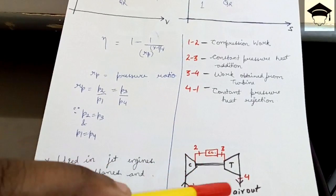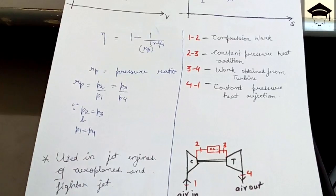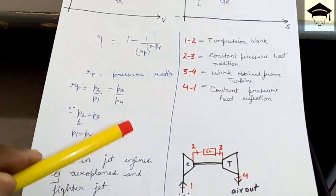And this is the open cycle and this is the main cycle that is employed in jet engines as well as aeroplanes. And because of Newton's third law, every action has equal and opposite reaction.